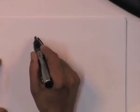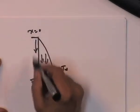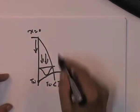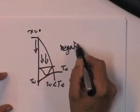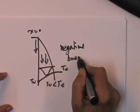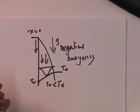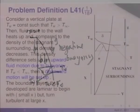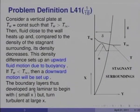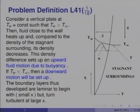In the case where T_w is less than T_infinity, we measure x = 0 at the top and downwards, with g acting in that direction. The boundary layers that develop are laminar to begin with, but beyond a certain length the boundary layer becomes unstable and turns turbulent, so there is a transition point beyond which the boundary layer becomes turbulent. Let us first consider only the laminar boundary layer.